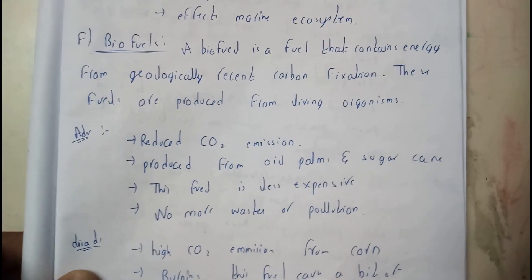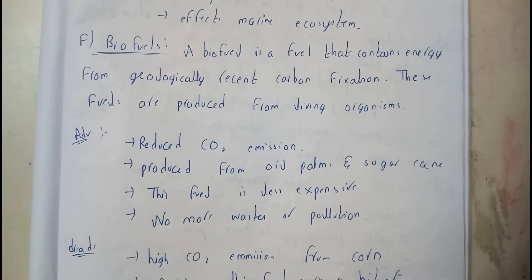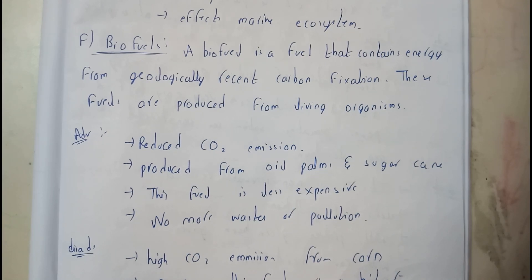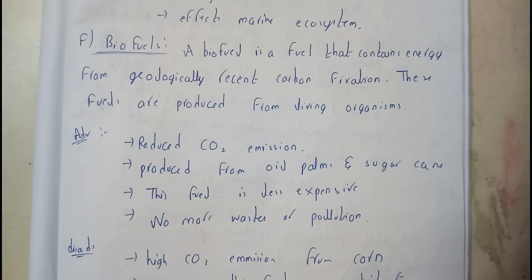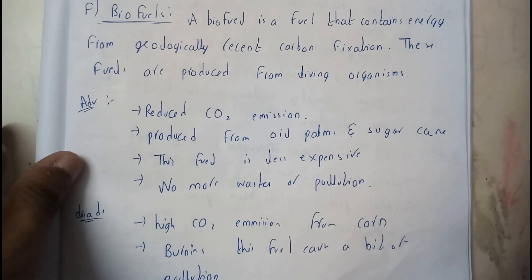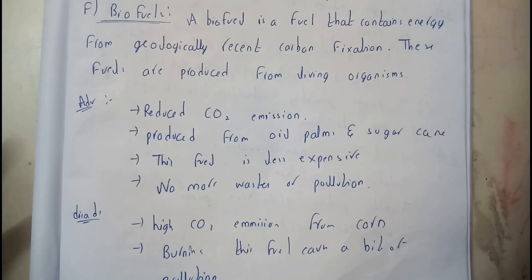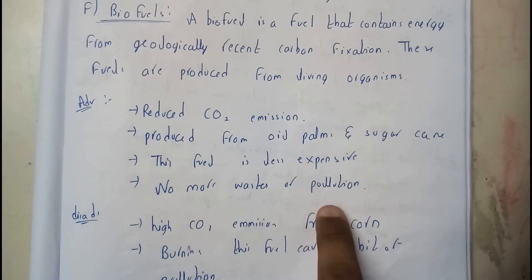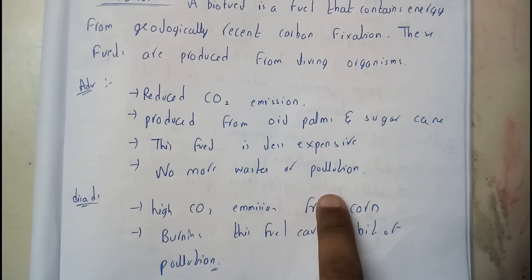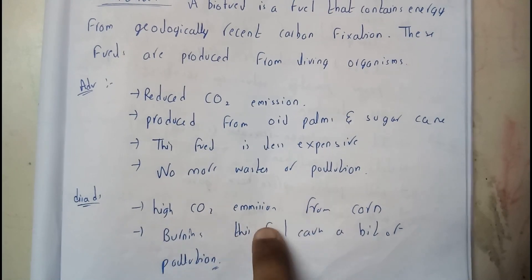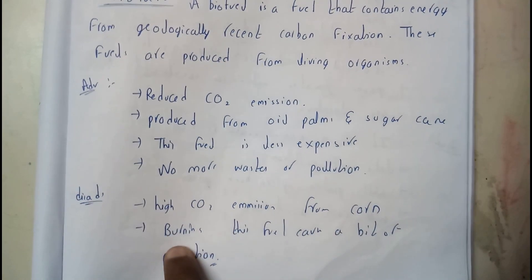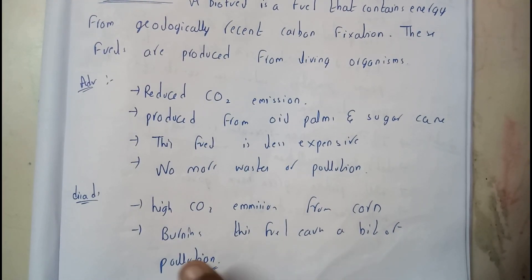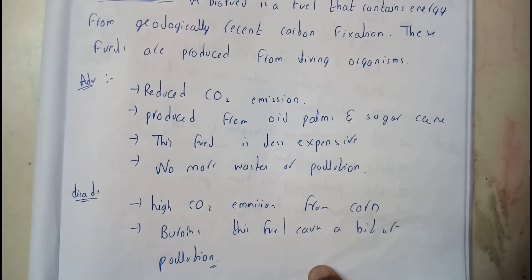Next is biofuel — a fuel that contains energy from geologically recent carbon fixation. These fuels are obtained from living organisms. Major advantages: it reduces CO2 emissions; it is produced from oil and sugarcane; it is less expensive; and it produces no air pollution. Disadvantages: there is high carbon dioxide emission from corn, and burning these fuels causes significant pollution.